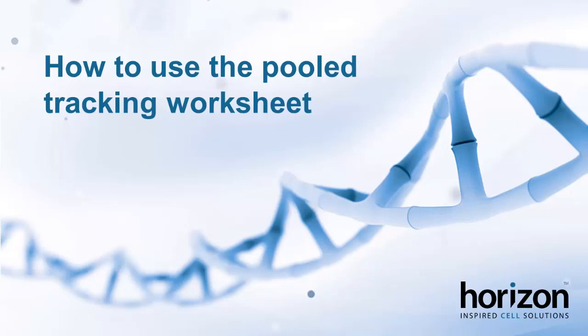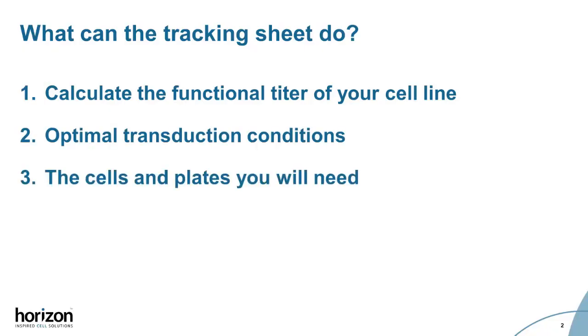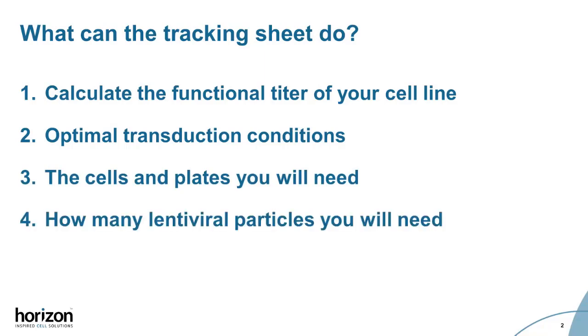In this video we will go through how to use the pooled tracking worksheet. The tracking worksheet can be used both before and after you buy your pooled screening library. You can work through the entire sheet before buying to calculate the functional titer in your cell line, optimal transduction conditions, and how many cells and plates you'll need. Using the sheet you can estimate the amount of lentiviral particles you'll need. After you buy the pooled library you can refine estimated values to actual values.